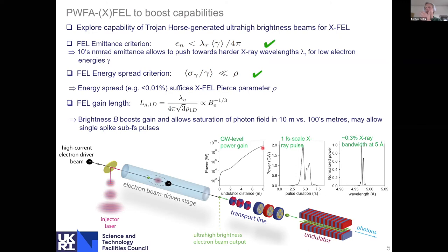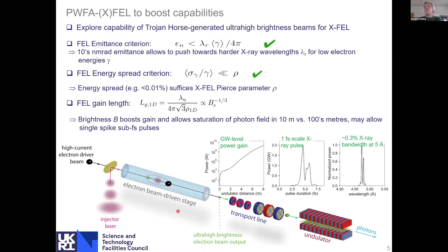Because of the high gain, the system also produces very short photon pulses. We have the electron beam driver, the plasma photocathode to generate ultra-high brightness beams, and then transport them into an undulator where you can obtain breathtaking results. This is something we pursue in a side project where VSim simulations play a central role.